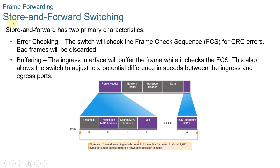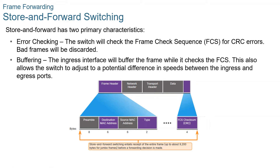Let's focus more on store-and-forward switching. It has two primary characteristics. First is error checking: after receiving the entire frame on the ingress port, the switch compares the frame check sequence or FCS value in the last field of the datagram against its own FCS calculations. The FCS is an error-checking process that helps ensure that the frame is free of physical and data-link errors. If the frame is error-free, the switch forwards the frame; otherwise, the frame is dropped.